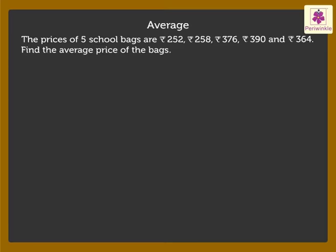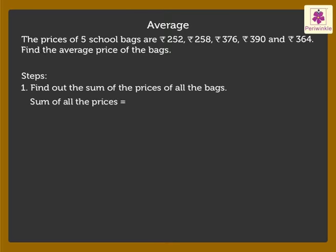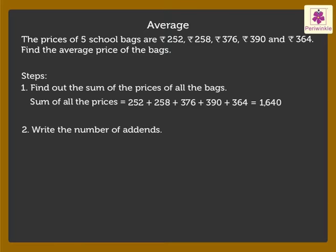To find the average, follow the steps given below. Step 1: Find out the sum of the prices of all the bags. Sum of all the prices is equal to 252 plus 258 plus 376 plus 390 plus 364, which is equal to 1640. Step 2: Write the number of addends. There are 5 bags, so the number of addends is equal to 5.